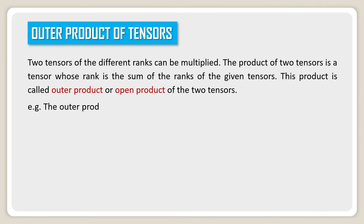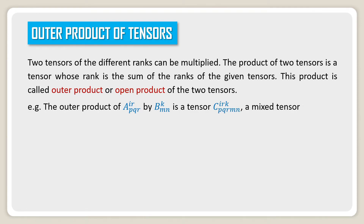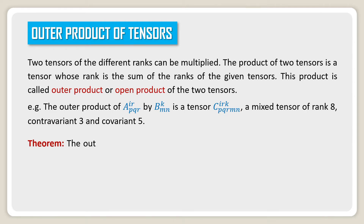For example, the outer product of A^i_rpqr by B^kmn is a tensor C^i_rkpqrmn, a mixed tensor of rank 8, contravariant 3 and covariant 5.